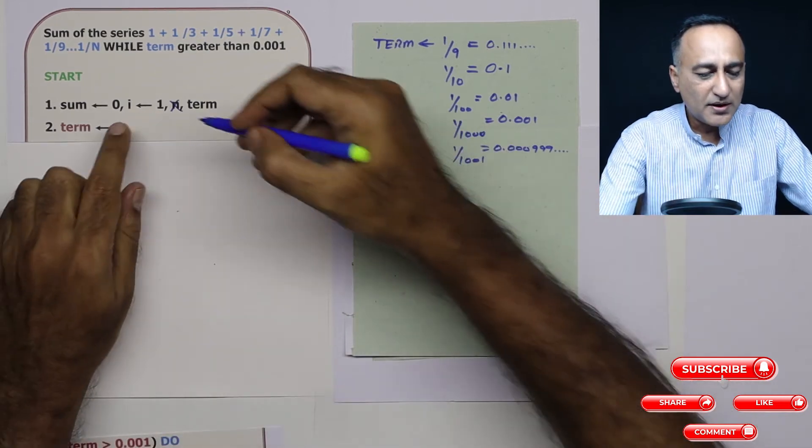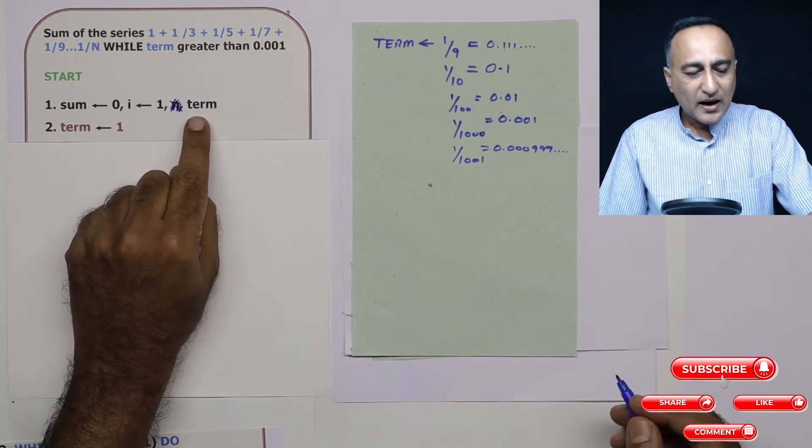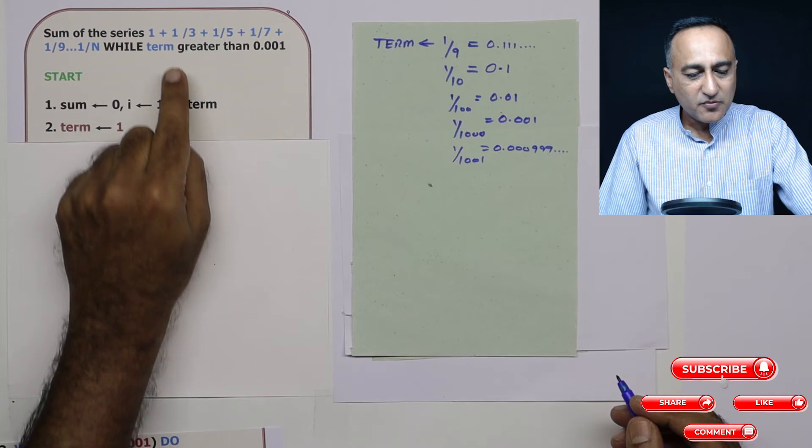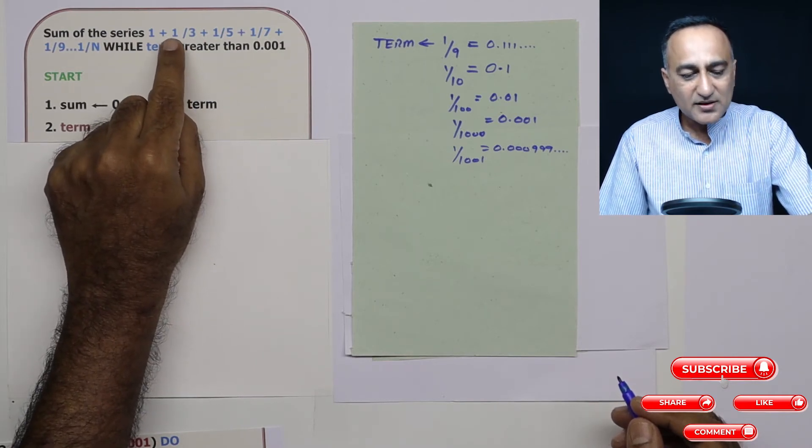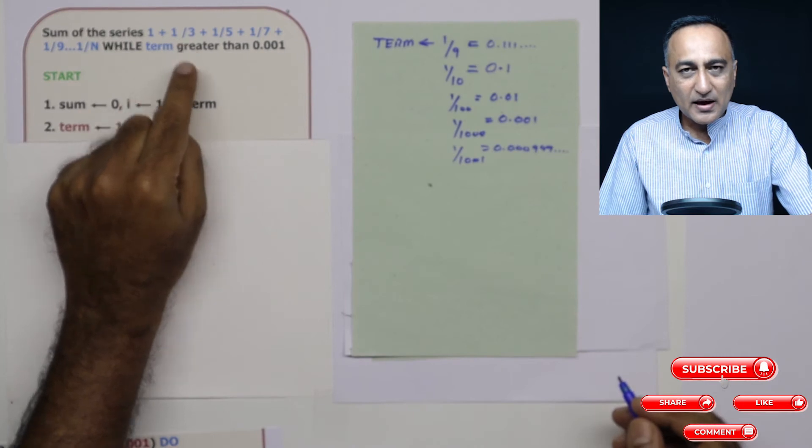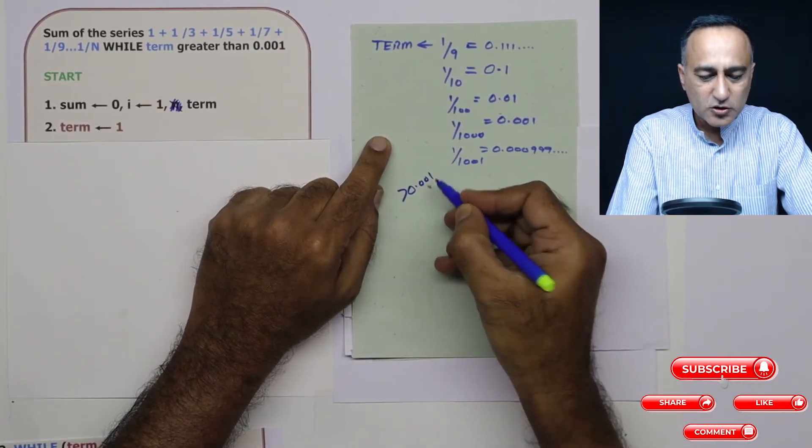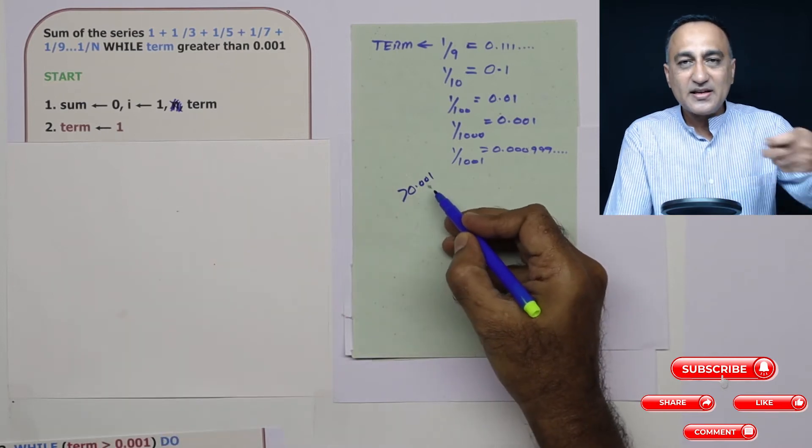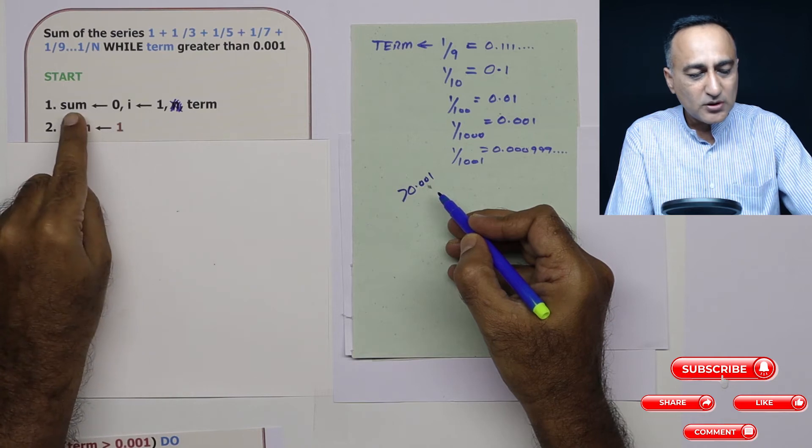Now what will term represent? I will cancel out this n and I'll tell you why you don't require the n. I require this variable term which is going to hold the result of 1 upon i. So whenever I calculate this 1 upon i, I need to check whether it is greater than 0.001. Only if it is greater than 0.001, then I need to add the value of term to sum.